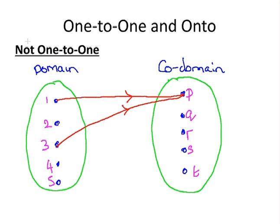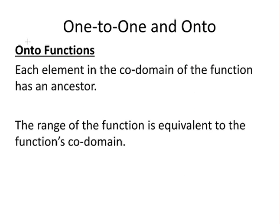Here's a counter example. We see that the image of one is p, but the image of three is also p. So p has two ancestors, and in that case this function would not be one-to-one. So that's one-to-one taken care of for the time being.